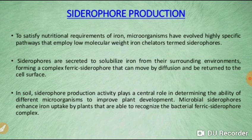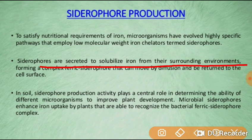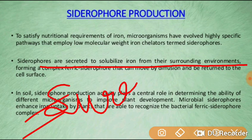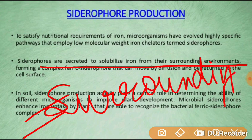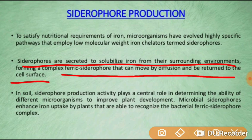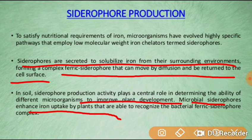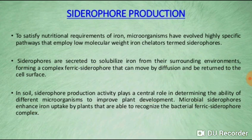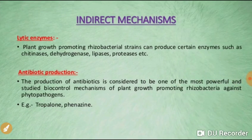For siderophore production, to satisfy the nutritional requirement of iron, microorganisms have evolved highly specific pathways that employ low molecular weight iron chelators called siderophores. These siderophores are secreted by microorganisms to improve plant development. Microbial siderophores enhance iron uptake by plants that are able to recognize the bacterial ferric-siderophore complex.